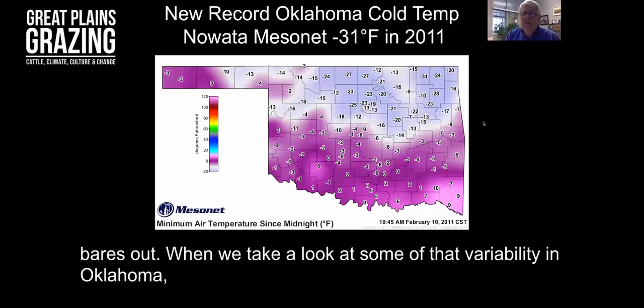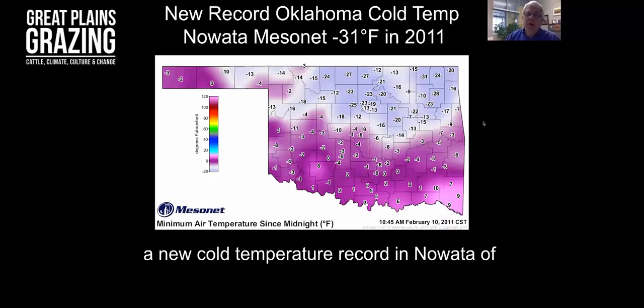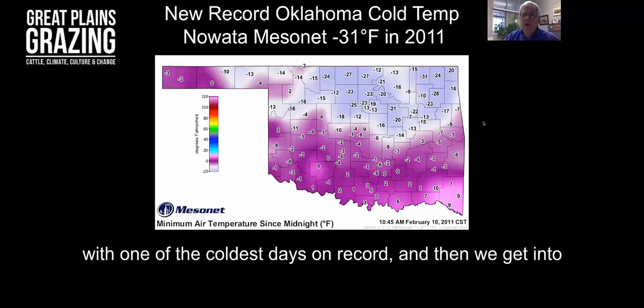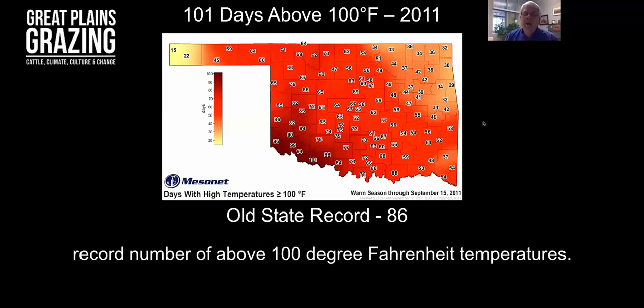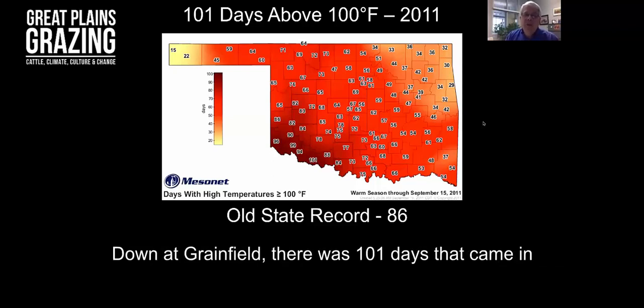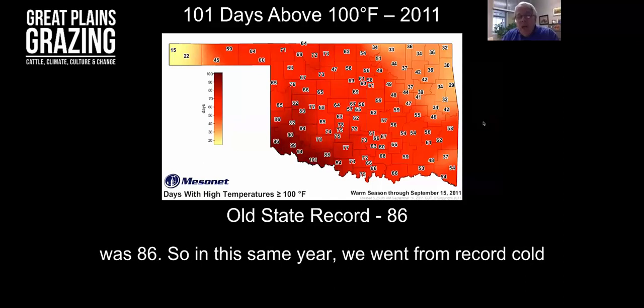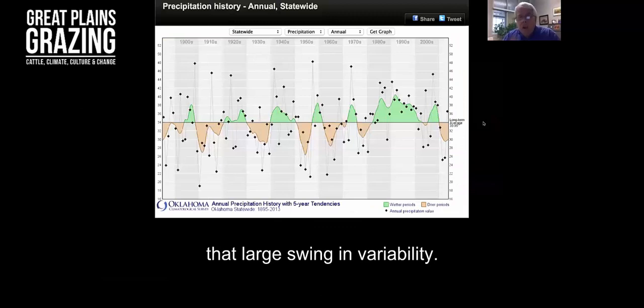When we take a look at some of that variability in Oklahoma, we go back to 2011. That year we set a new cold temperature record in Nowata of minus 31 degrees Fahrenheit. So we have a winter with one of the coldest days on record, and then we get into a summer in that same year where we had a record number of above 100 degree Fahrenheit temperatures. Down at Grandfield, there were 101 days that came in above 100 degrees Fahrenheit. The old state record was 86. So in this same year, we went from record cold to record heat, and we see that consistently in the Great Plains, that large swing in variability.